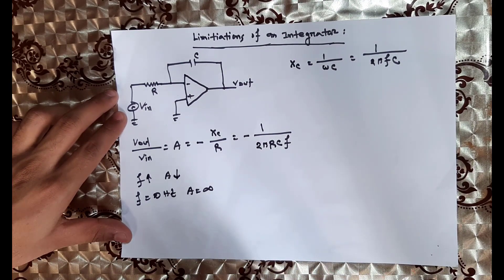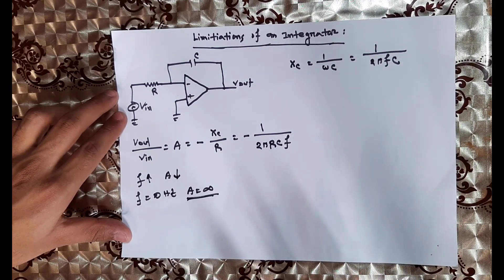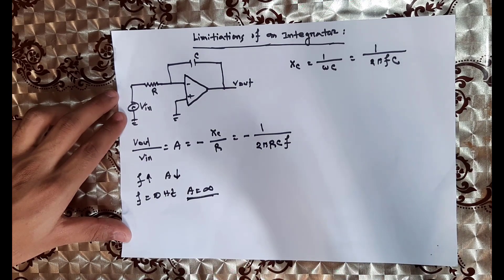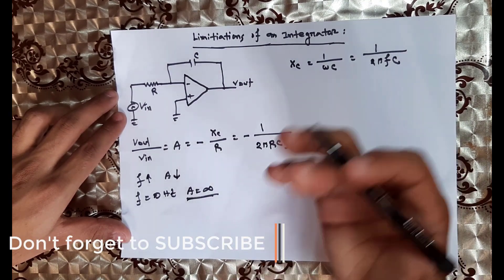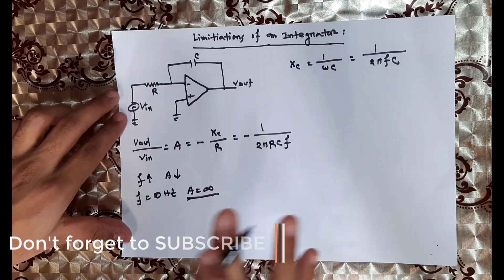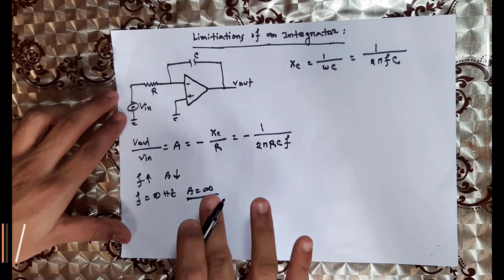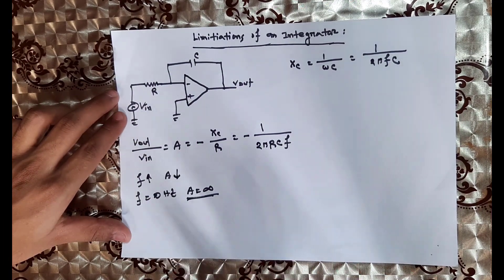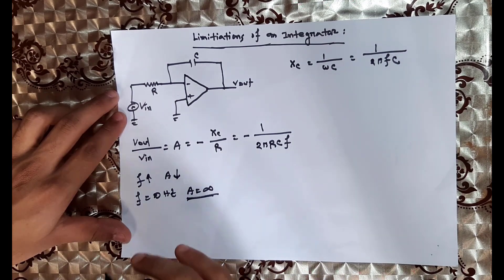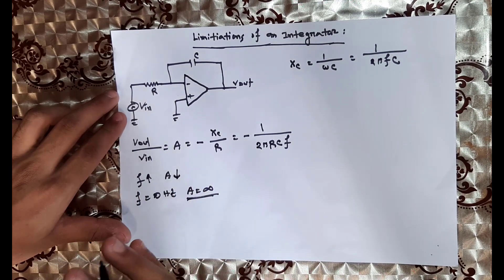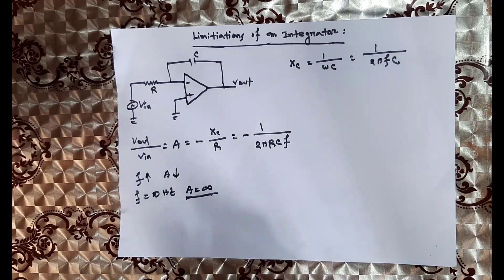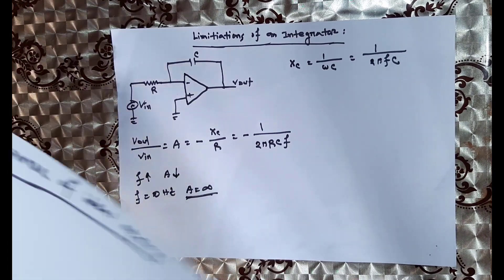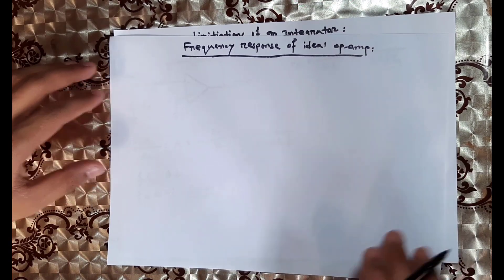The infinity gain works the same way. When we work at very low frequency, the gain approaches infinity. But we do not work at infinity gain in practice, because the output is limited. So the infinity gain is limited by the real op-amp. The frequency response of the ideal integrator shows this.